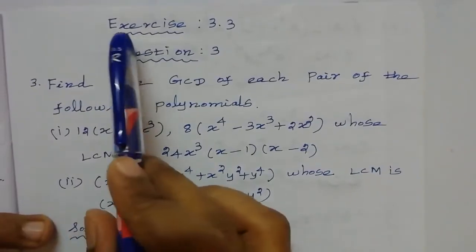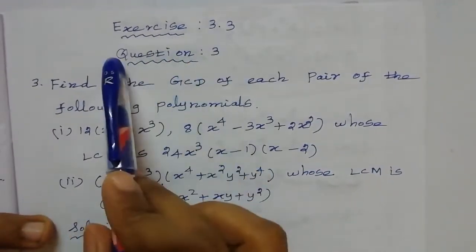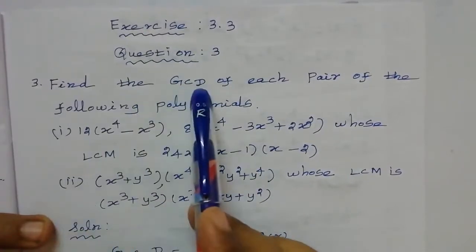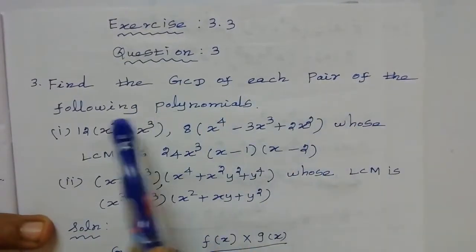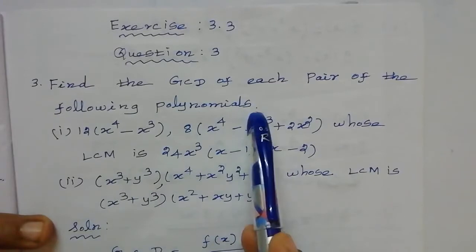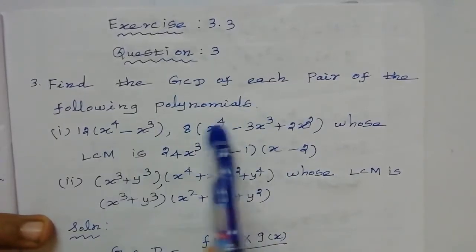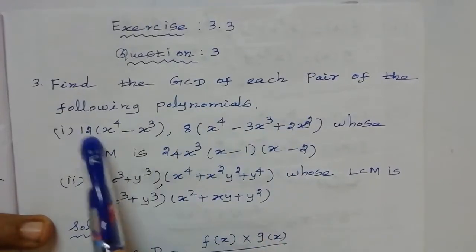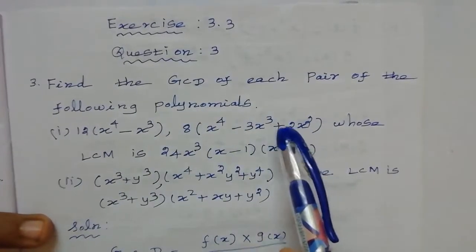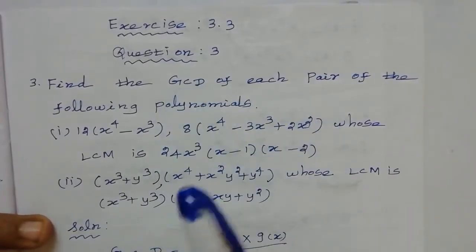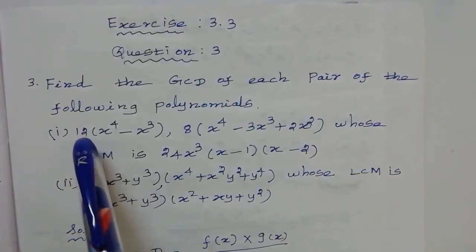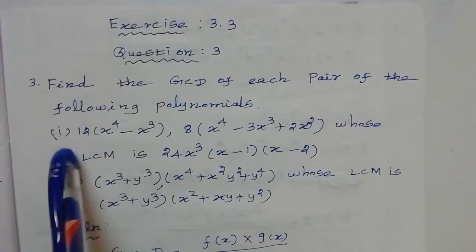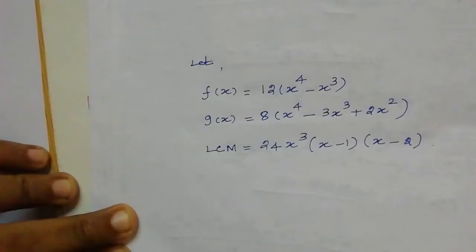Hi students, Exercise 3.3 question number 3: find the GCD of each pair of the following polynomials. For this question we have two polynomials and the LCM using three given conditions to find out the value of GCD. We have two subdivisions; first I will give the answer for the first question.